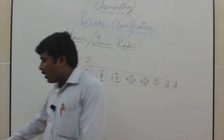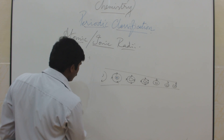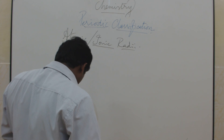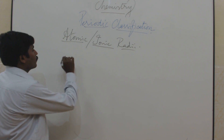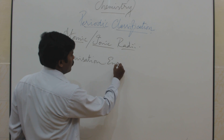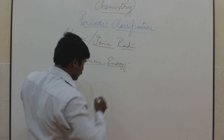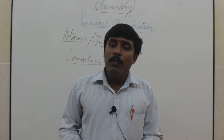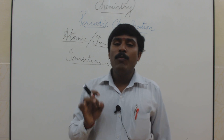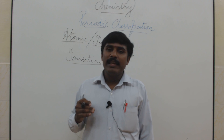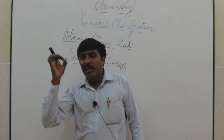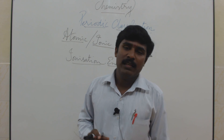The next concept is ionization energy. So, what is ionization energy? It is the amount of energy required to remove the electron present in the outermost shell — specifically, to remove the loosely bound electron from a gaseous, isolated, neutral atom. At that point, the neutral atom becomes a positive ion.